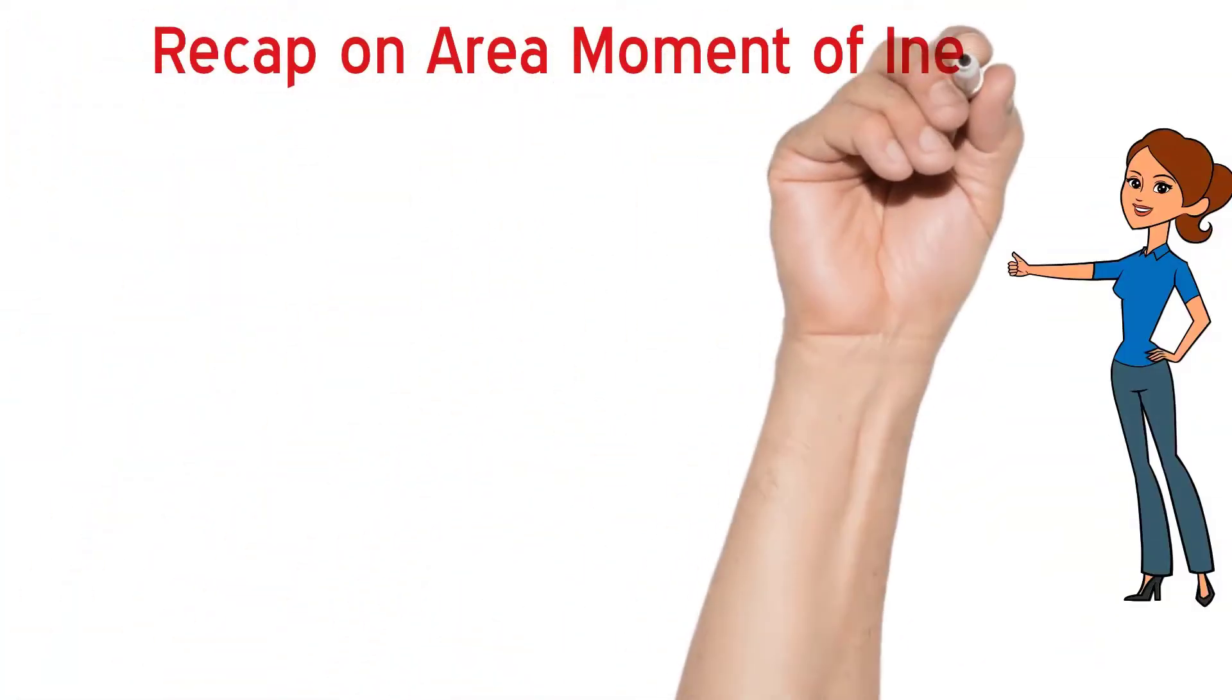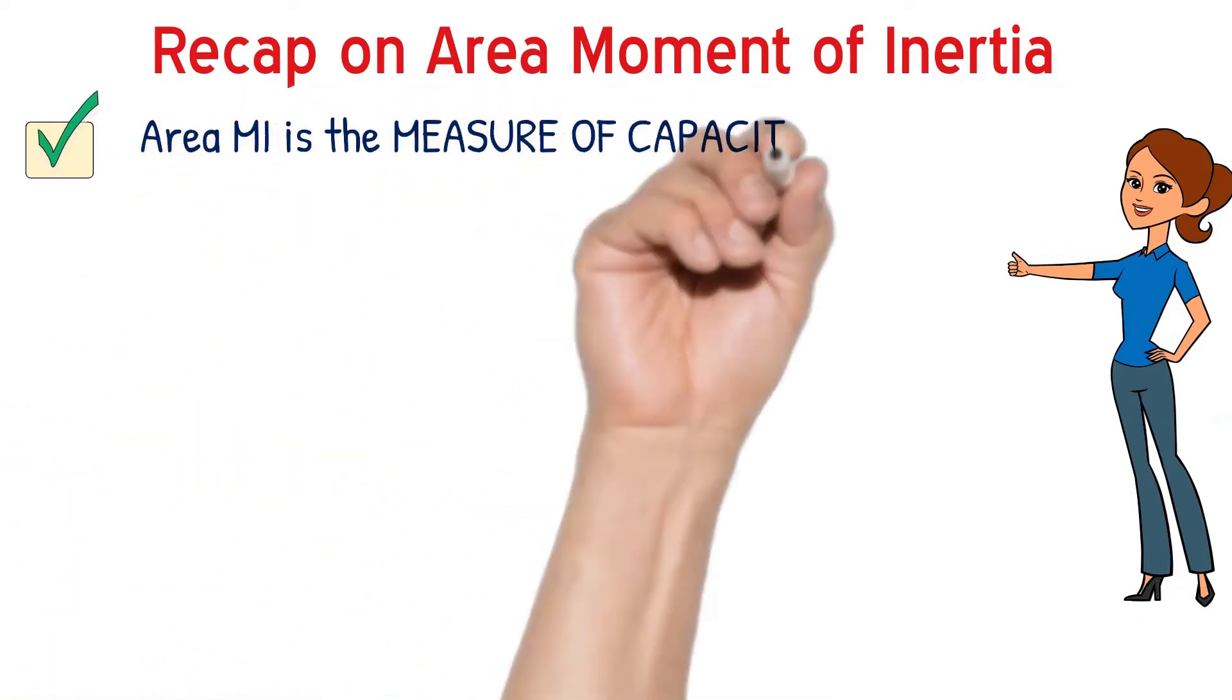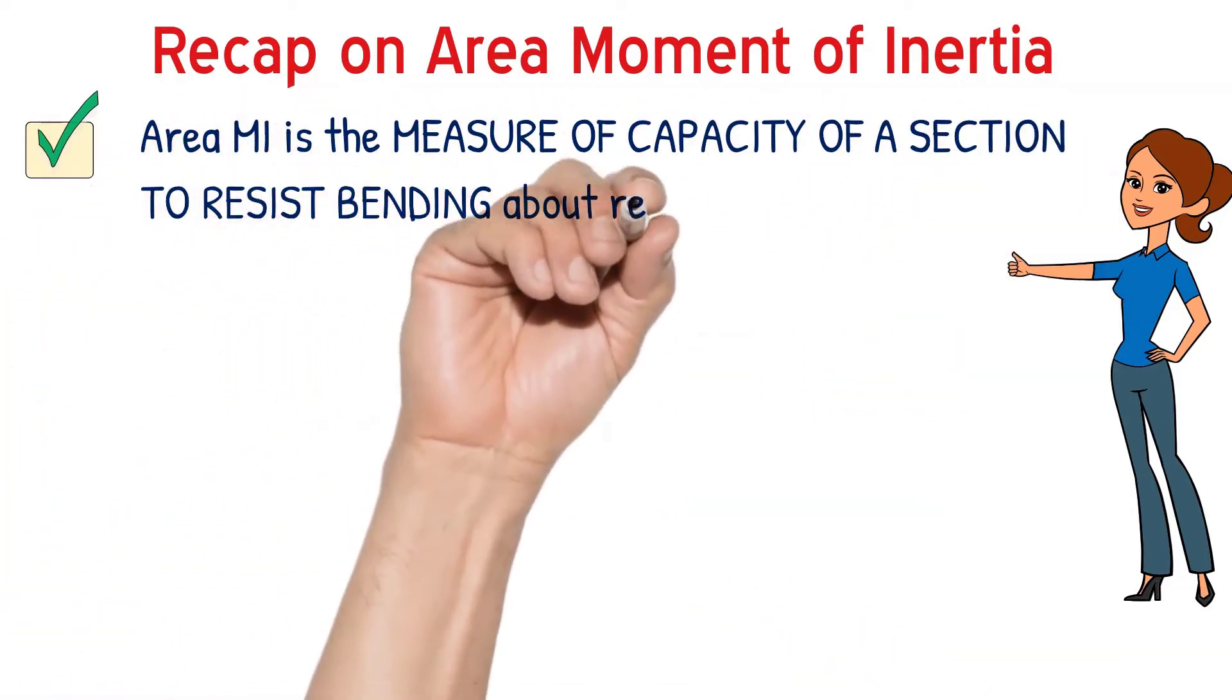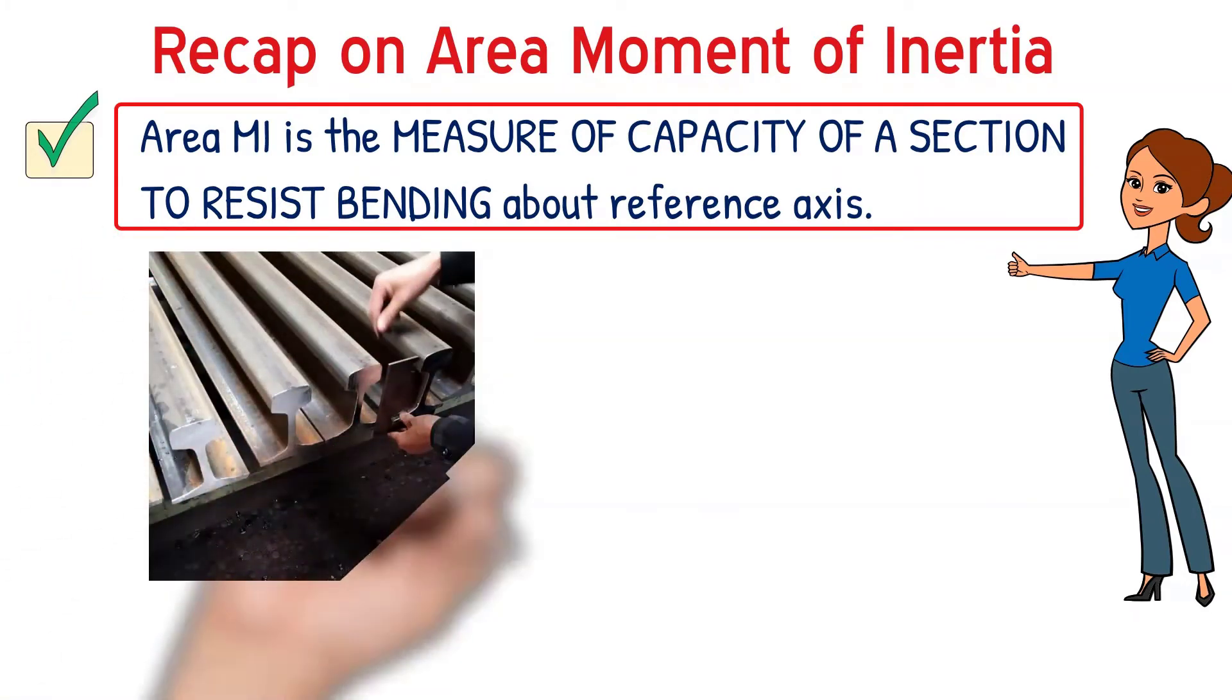Now, we shall see the third term, area moment of inertia. Inertia and mass moment of inertia are the properties of the solid body. Whereas, the area moment of inertia is the property of a plane lamina, of a section.